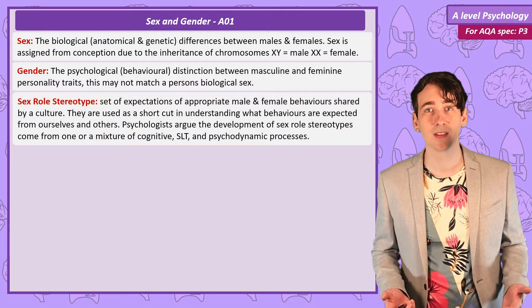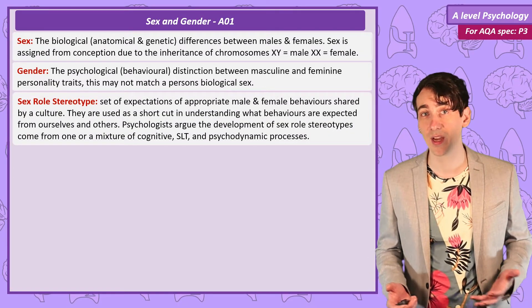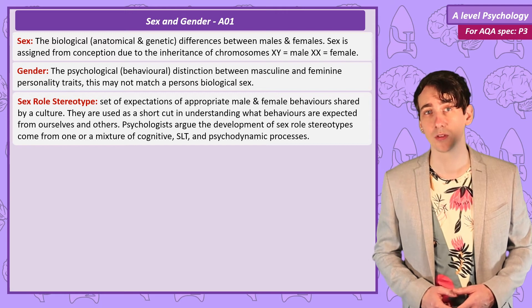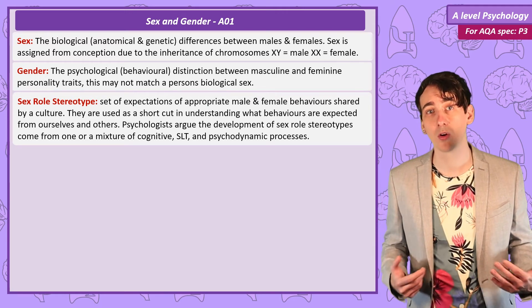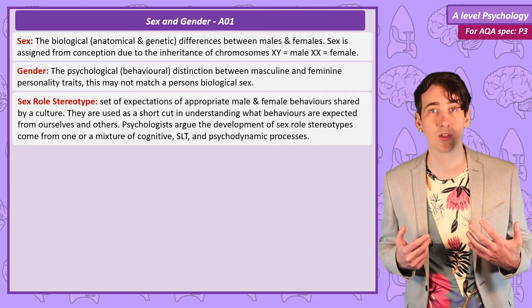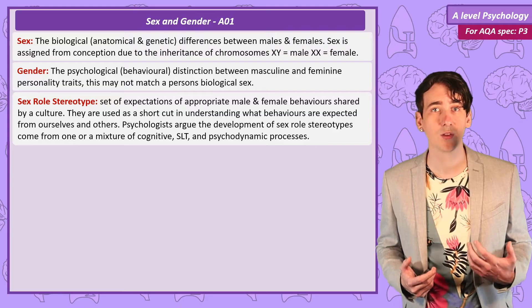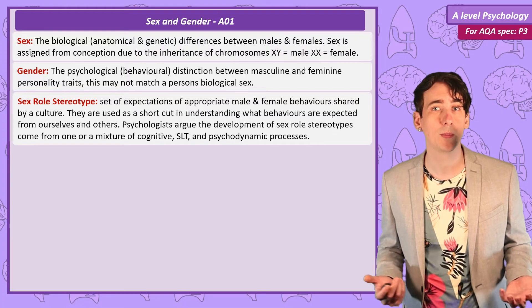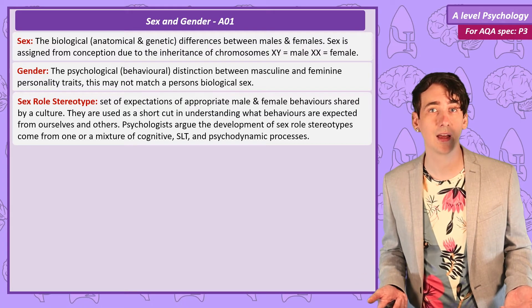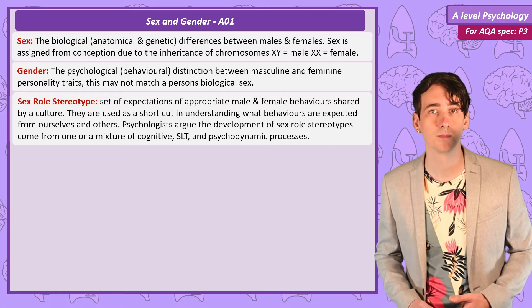When we think of the set of behaviours that are expected from males and females in society, this is what we call a sex role stereotype. This is a set of expected behaviours that can vary significantly between cultures. But within our own culture, we use a set of shared sex role stereotypes to predict other people's behaviour and decide how to behave ourselves.